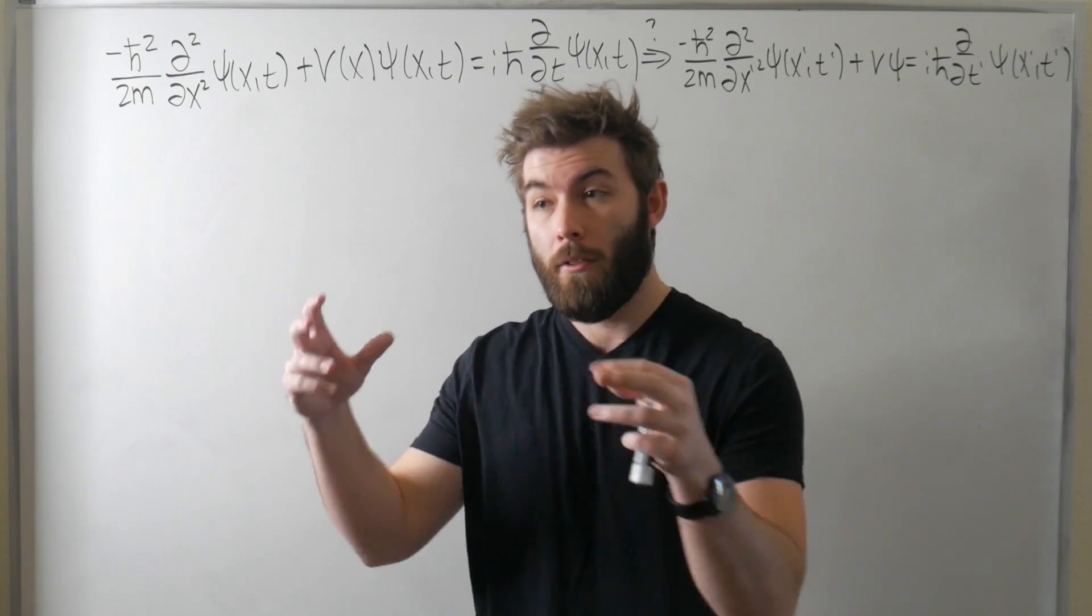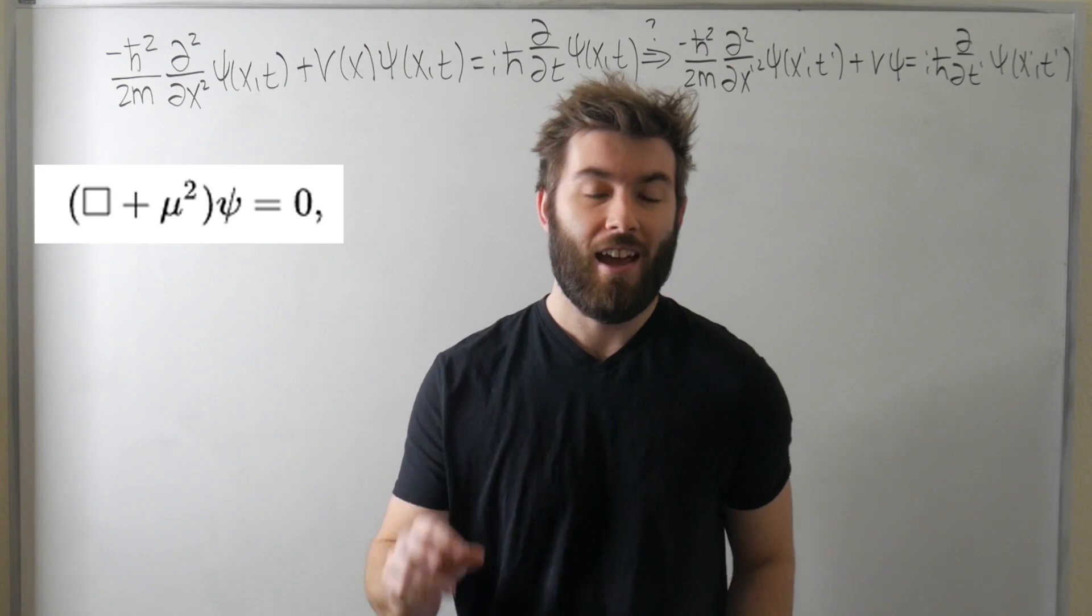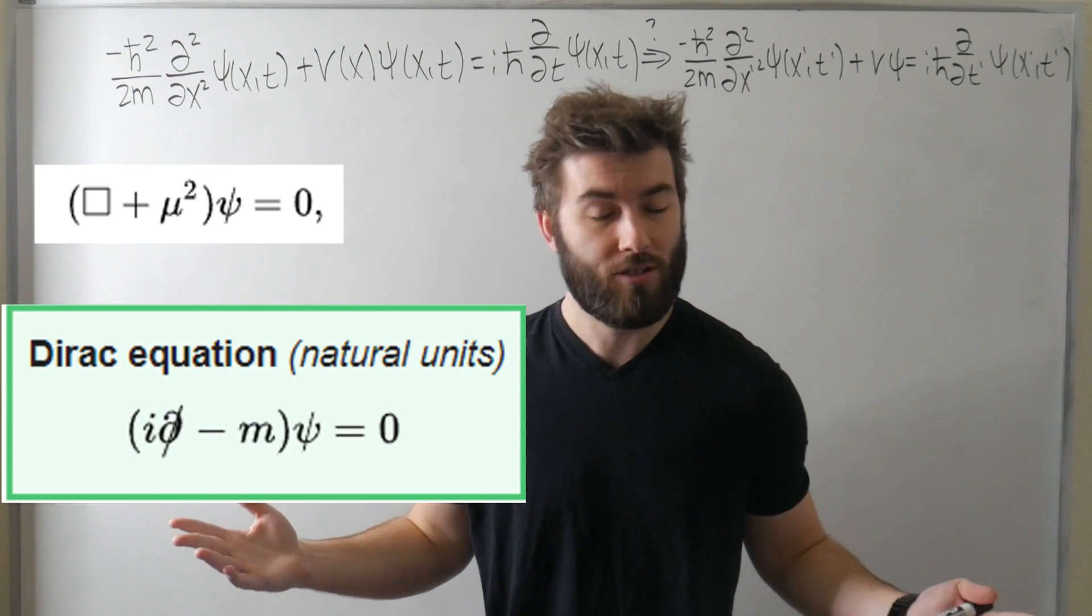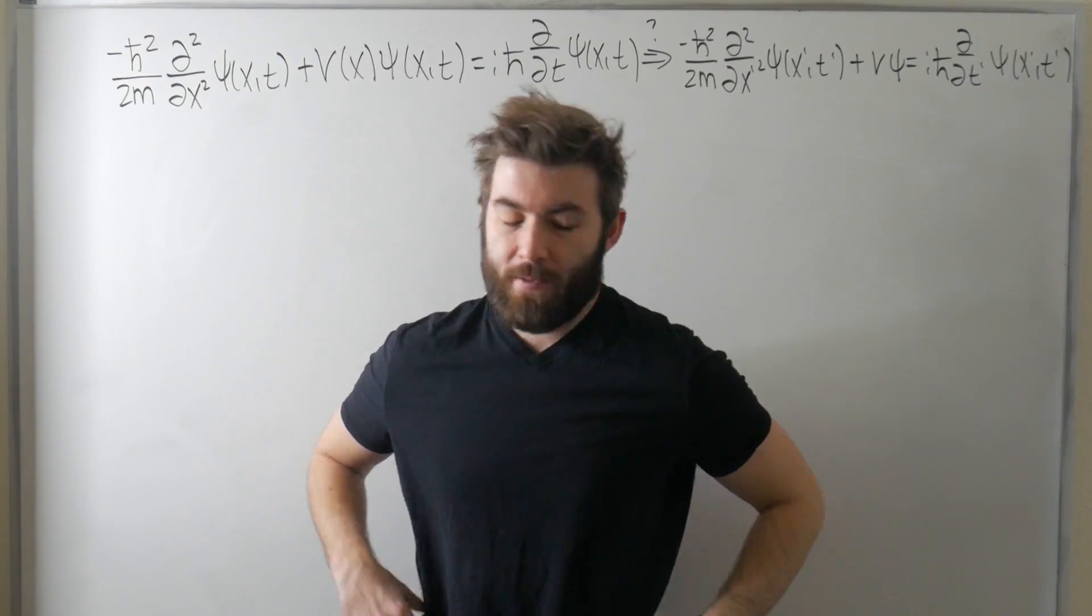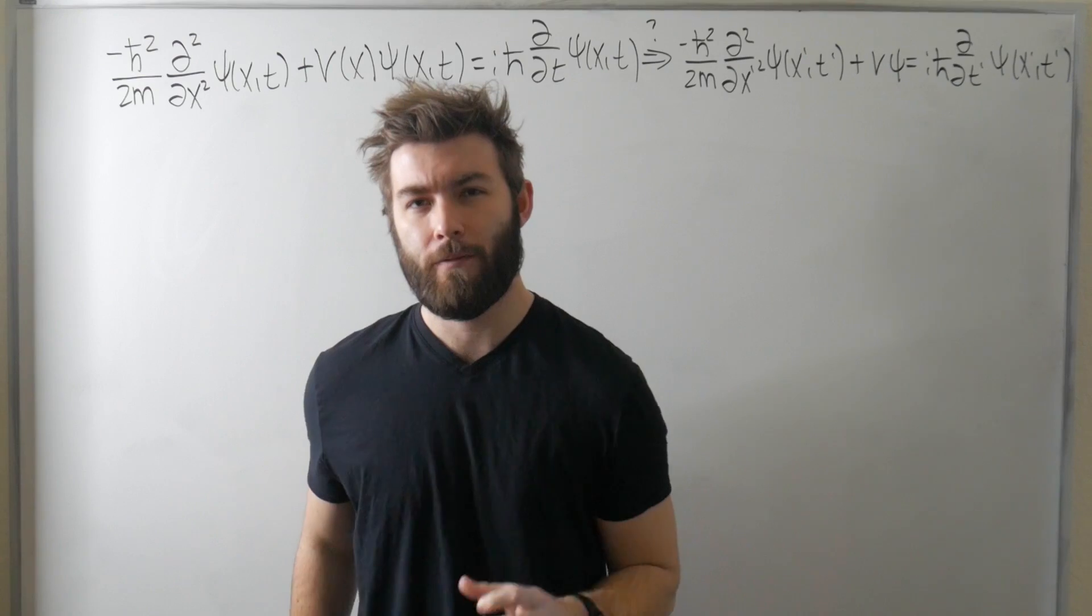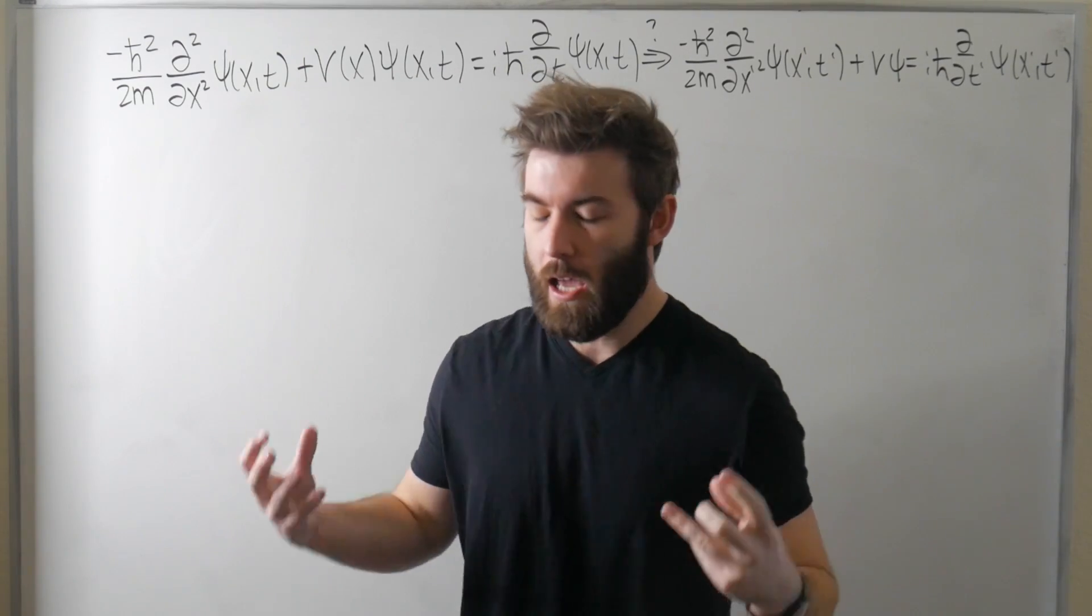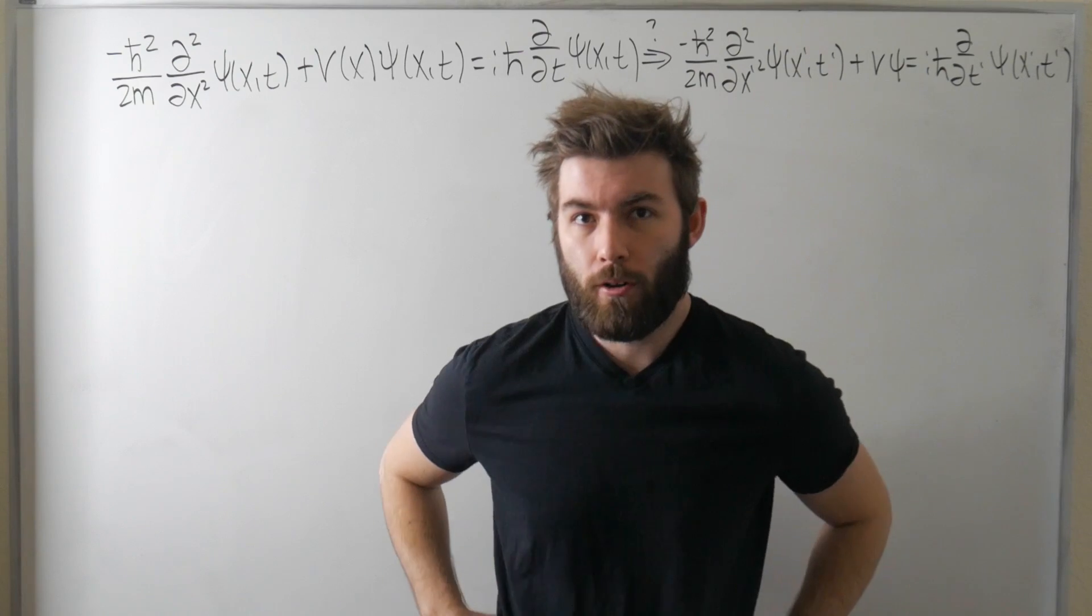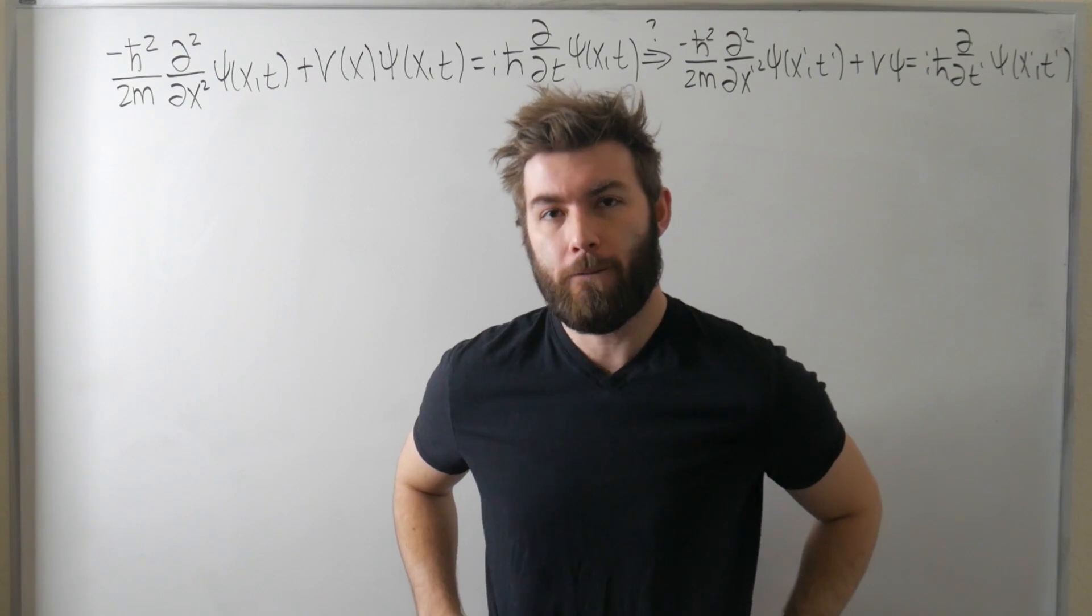Less than a year after, the Klein-Gordon equation was published. Less than two years after, the famous Dirac equation was published. So people weren't messing around. You have to be an absolute mad lad like Paul Dirac to come up with a fully functioning relativistic theory of spin one-half particles.